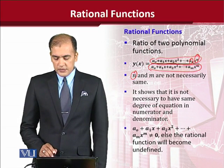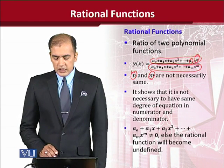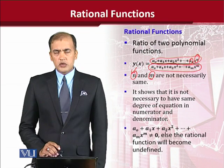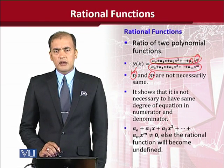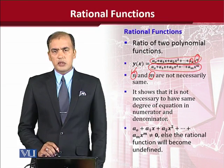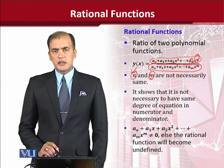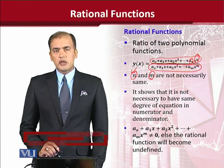The denominator ends with m and the numerator ends with n. It is to show that not necessarily the same polynomials will be in the numerator as well as in the denominator. They are likely to differ.